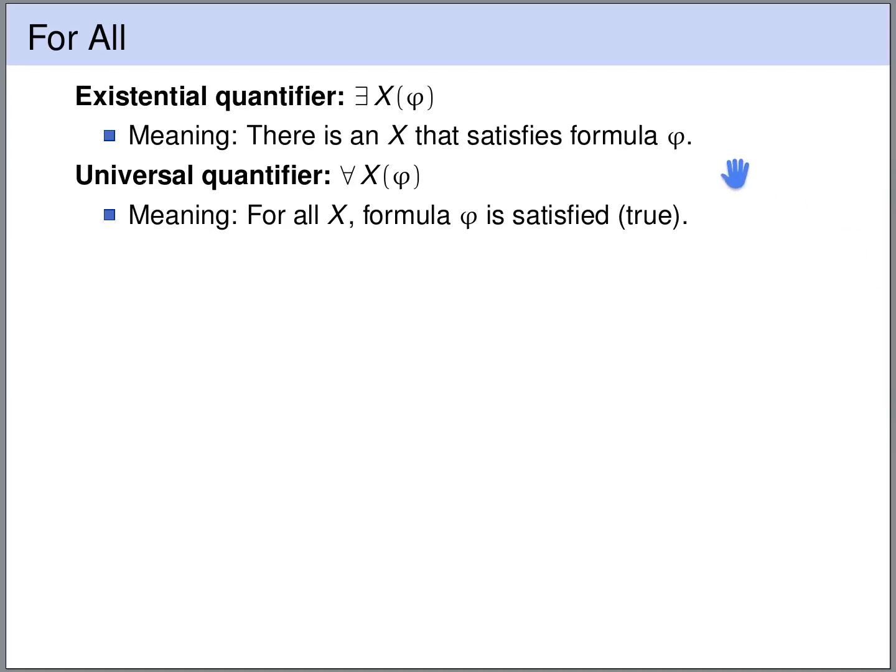In logic we have existential quantifiers and universal quantifiers. The existential quantifier allows us to express that there exists an object x such that the property phi holds. So phi is a formula that has to hold for some x. The universal quantifier expresses for all object x the formula phi has to hold.